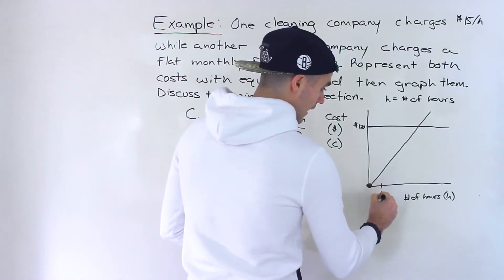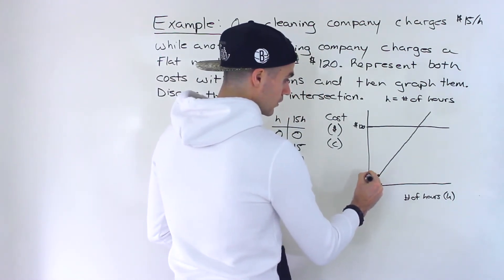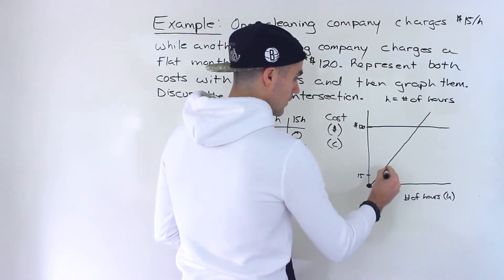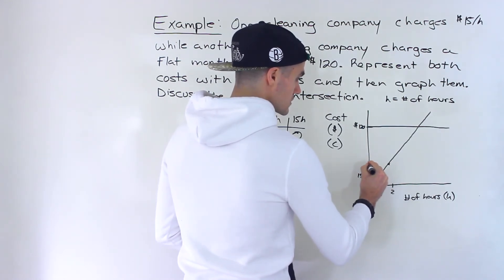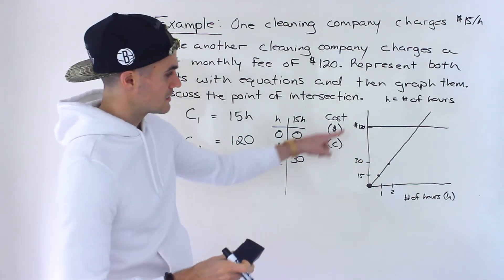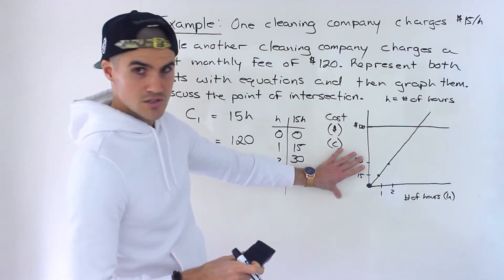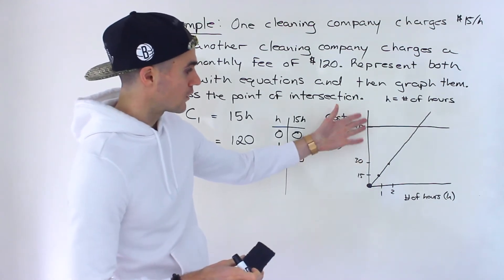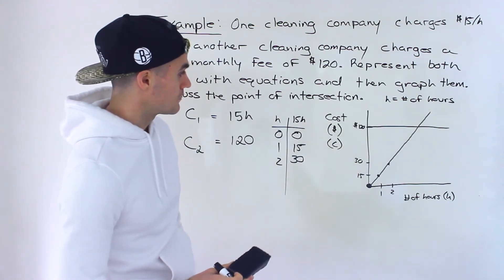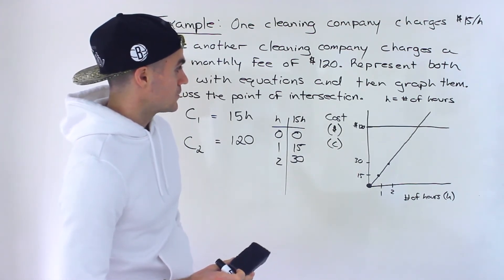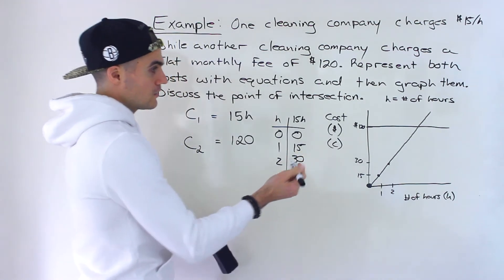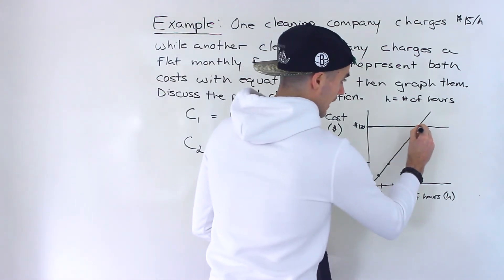So for example, over here at one hour, the cost would be 15. At two hours, the cost would be 30, et cetera. This is not to scale right here, it's just a rough drawing. If you were to draw it on graph paper, it would be more to scale, but this is basically how it looks right here. And so we have both drawings now and notice that they're intersecting at this point.